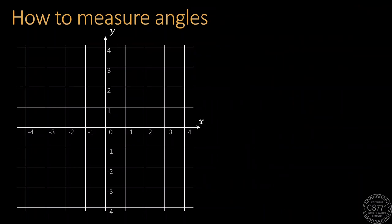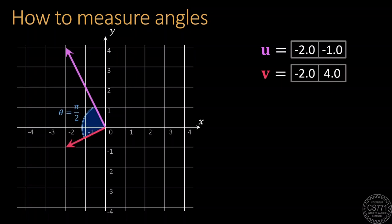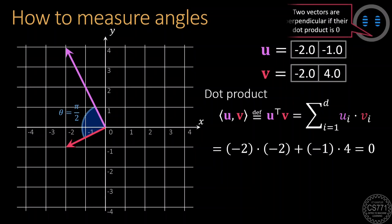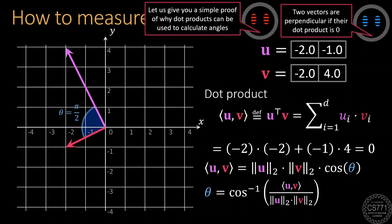A special case arises when the two vectors in question are actually perpendicular to each other. In that case, their dot product turns out to be exactly zero. Now, in case you're wondering, why should the dot product of two vectors be linked to the angle between them, let's see a very simple proof of this fact.